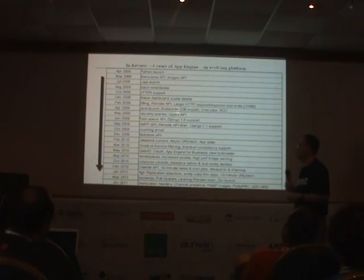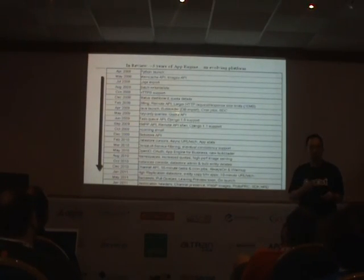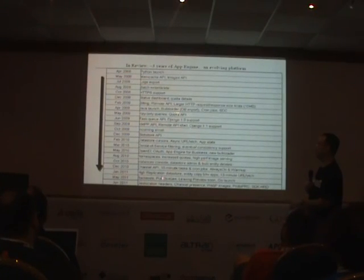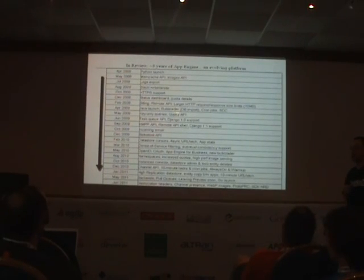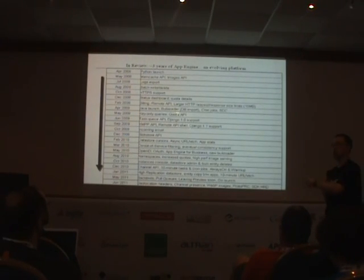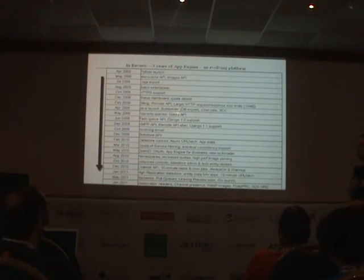In summary, we add features to App Engine all the time. This list changes so often that every time I give this kind of talk I have to update the slide. In 2008, 2009, 2010, and 2011 we've been consistently adding features. Documentation has categories where you can pull up the services section and see what the specific APIs are.